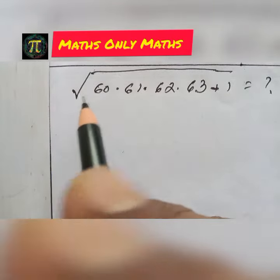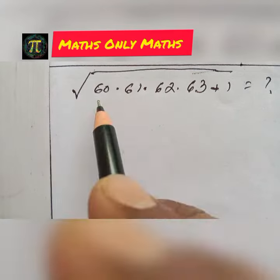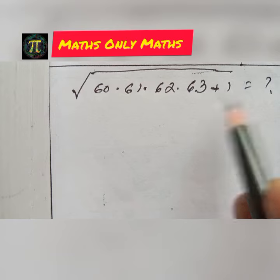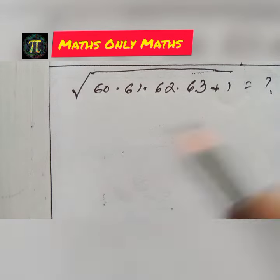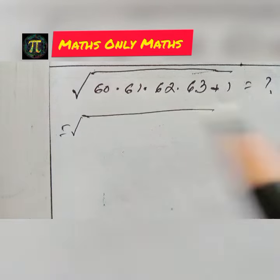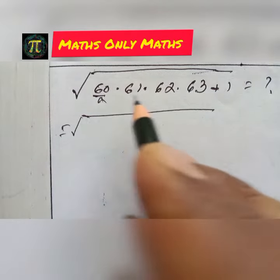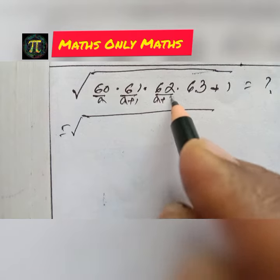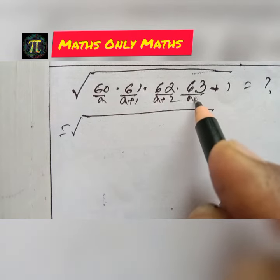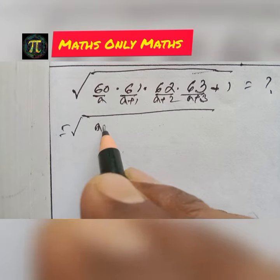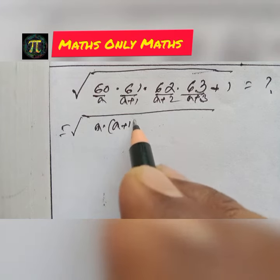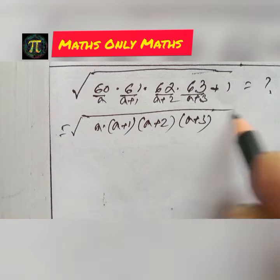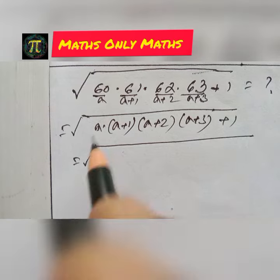The question is: square root of 60 × 61 × 62 × 63 + 1. What is the value? I take 60 as a, so 61 is a+1, 62 is a+2, 63 is a+3. So I get √(a × (a+1) × (a+2) × (a+3) + 1).